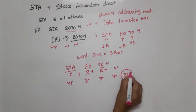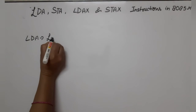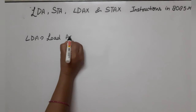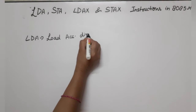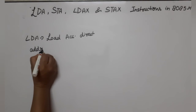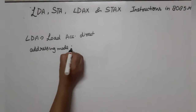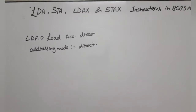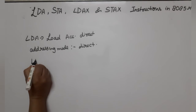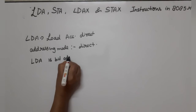The next instruction is LDA — Load Accumulator Direct. The addressing mode is direct addressing mode. The format is: LDA followed by a 16-bit address. For example, LDA 2050H.